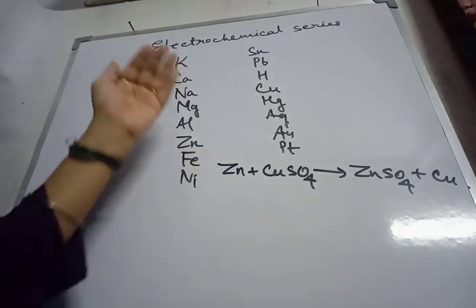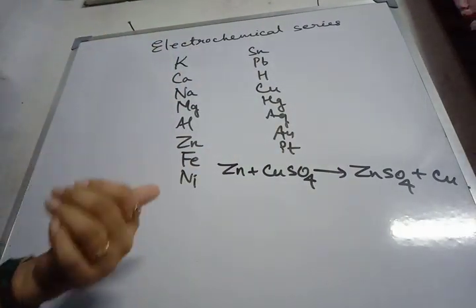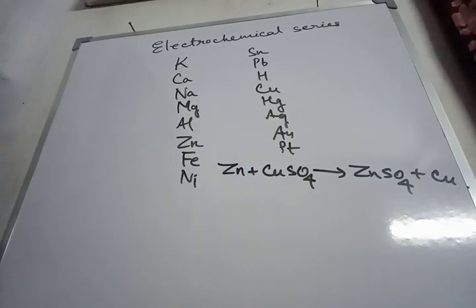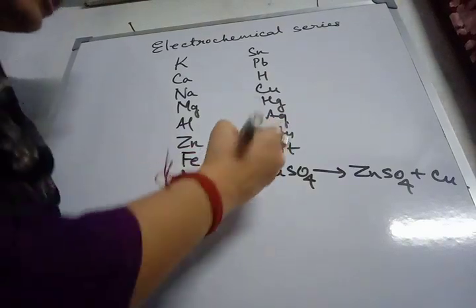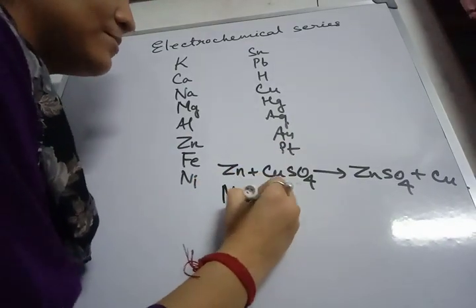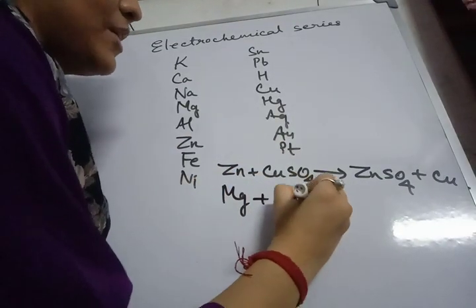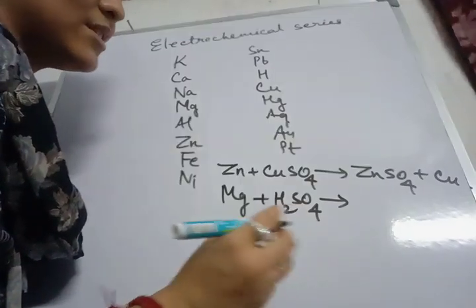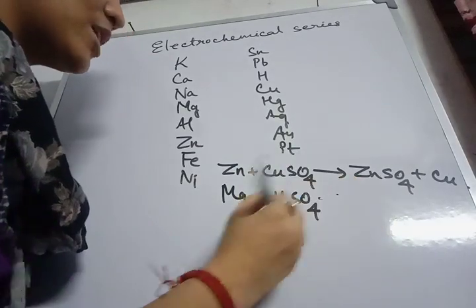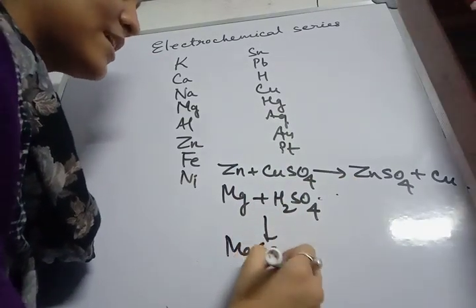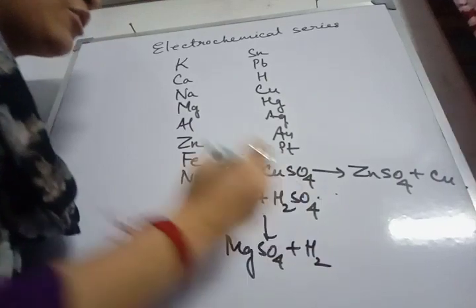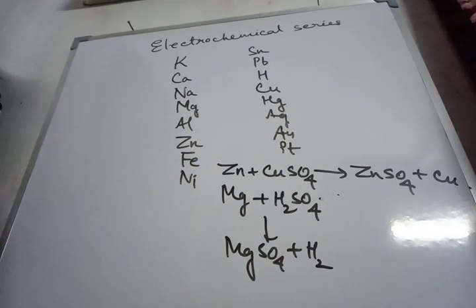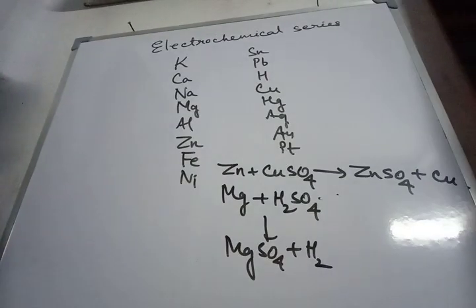The metals present above hydrogen in the series can displace hydrogen from dilute acids, while metals present below hydrogen cannot displace hydrogen from dilute acids. For example, magnesium reacts with dilute sulfuric acid and readily displaces hydrogen, forming magnesium sulfate plus hydrogen. But when copper reacts with sulfuric acid, since copper is present below hydrogen, there will be no reaction.